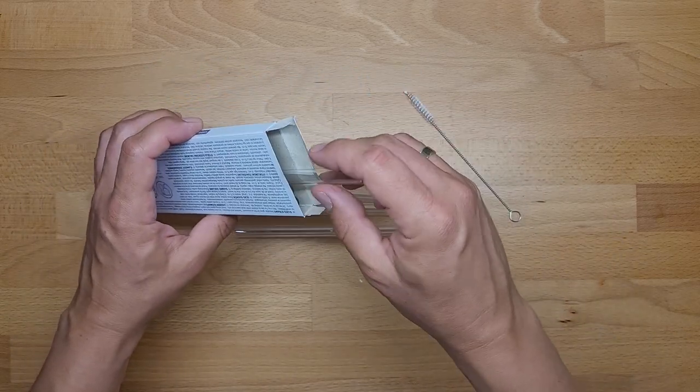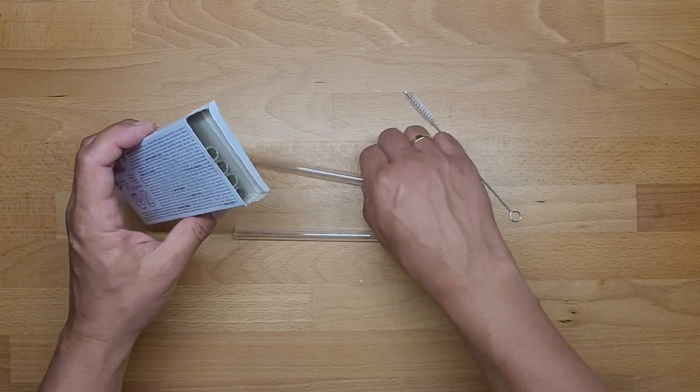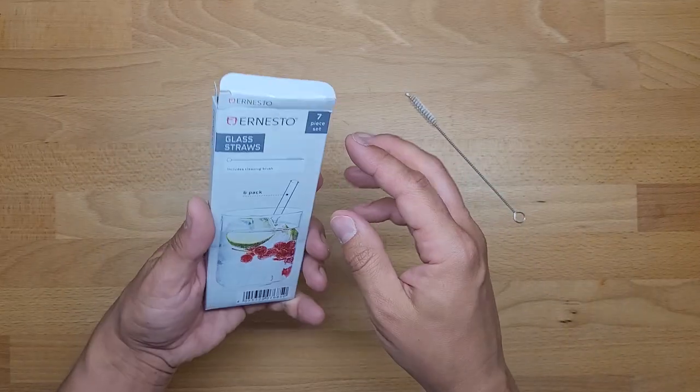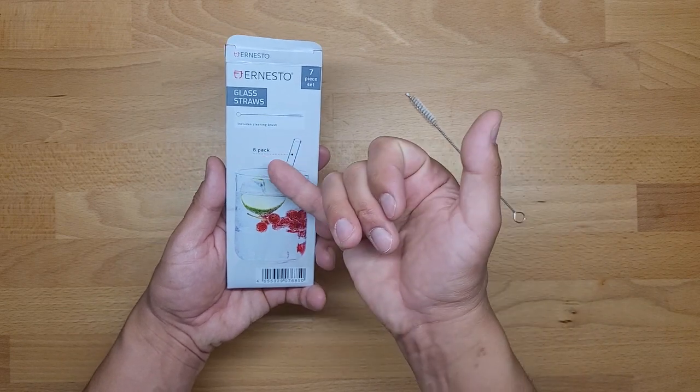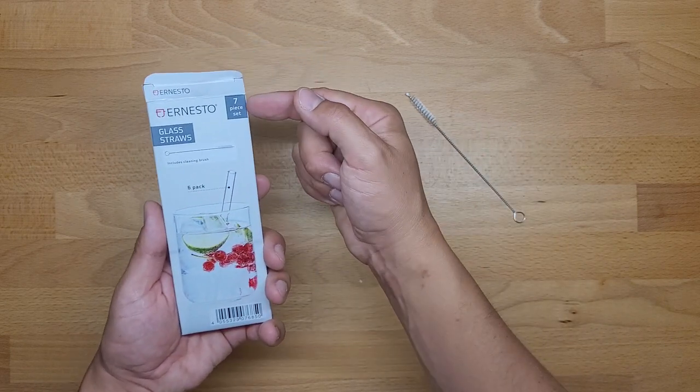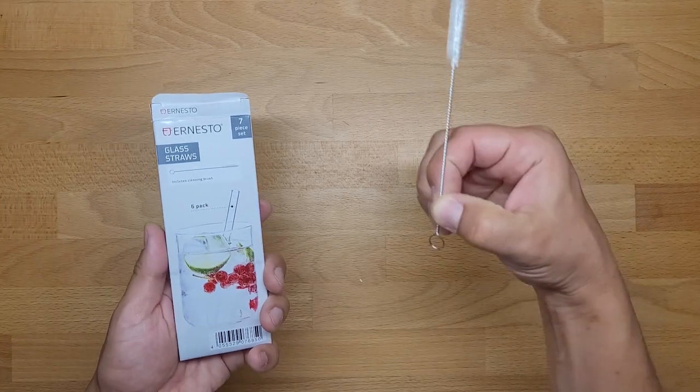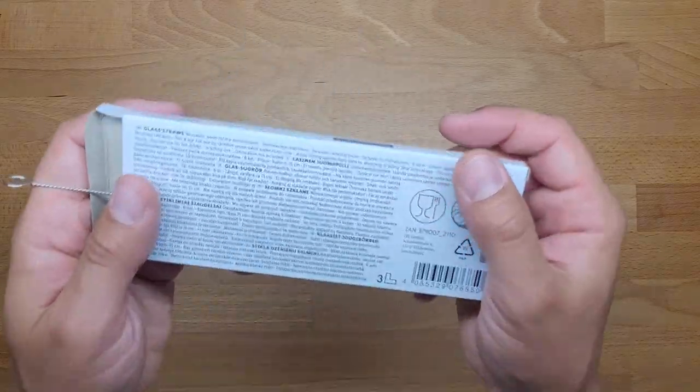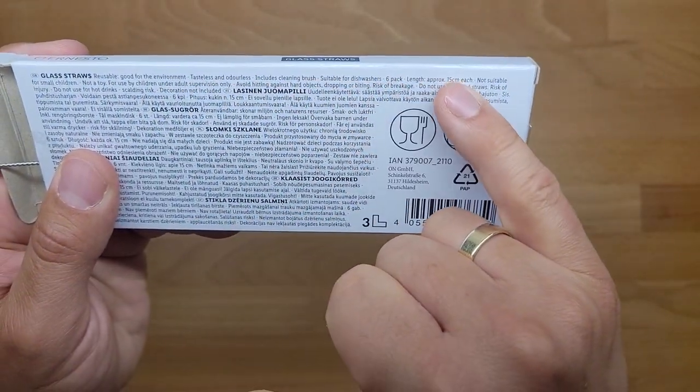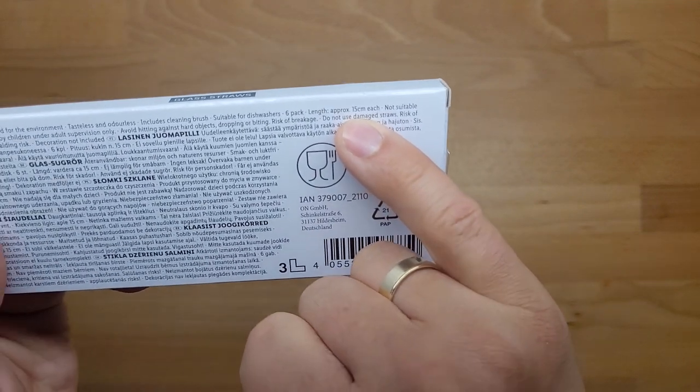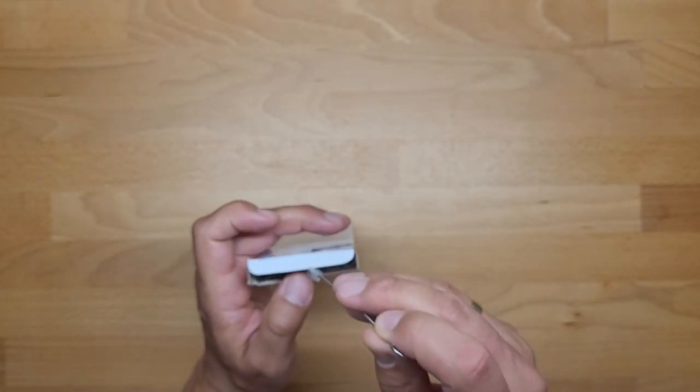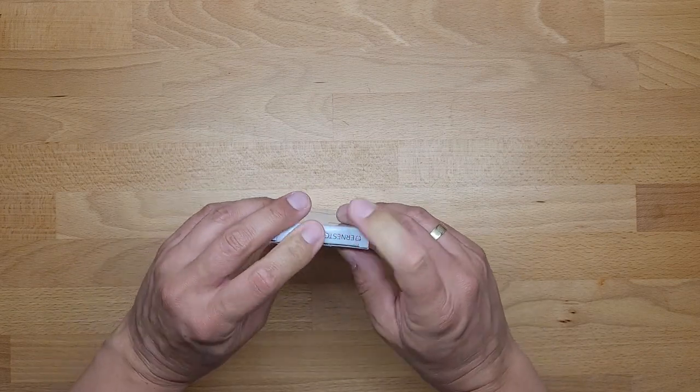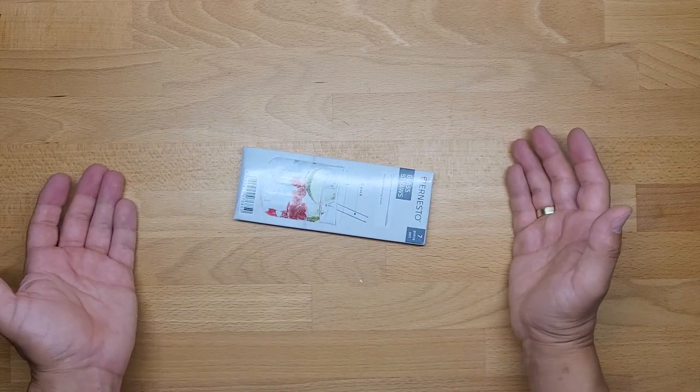How about the features? It's a six pack but seven piece set because the seventh part is here. What is the length of those straws? Yeah, 15 centimeters. So it is what it is.